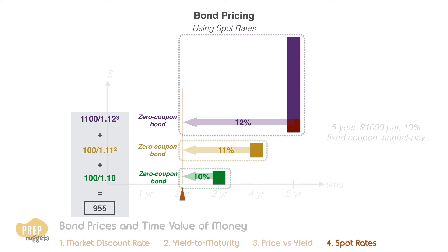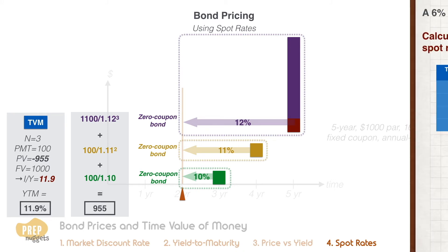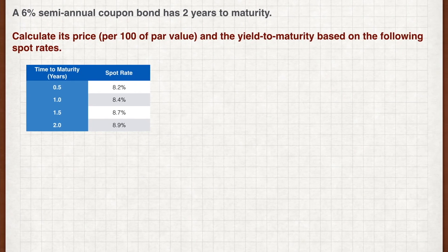The price comes out to 955. Note that you can't use the TVM calculator for this, as the discount rate for each cash flow is different. However, you can still use the TVM calculator to calculate the yield to maturity of the bond. Plugging in the figures, we get a yield to maturity of 11.9 percent.